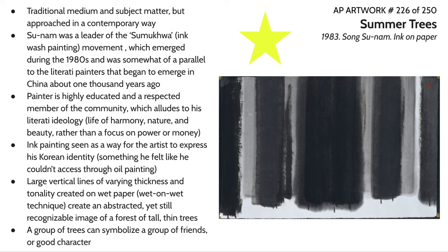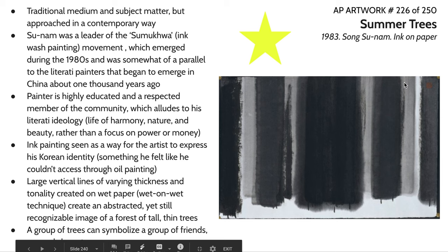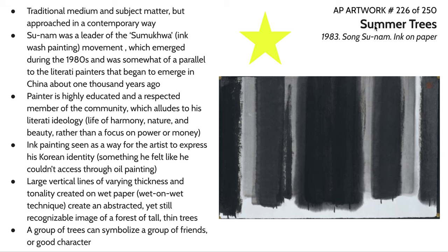Moving on to our next set of works in the Global Contemporary part of the curriculum. This next piece is called Summer Trees by Song Sunan. You'll notice that this is a very traditional medium and subject matter — a landscape of trees that kind of look like massive cypresses with little trunks at the very bottom. The title helps inform us of the subject matter.